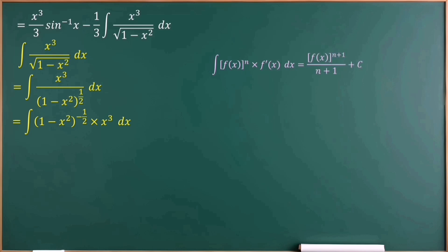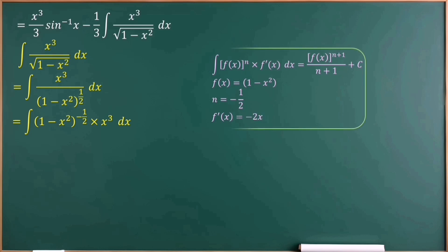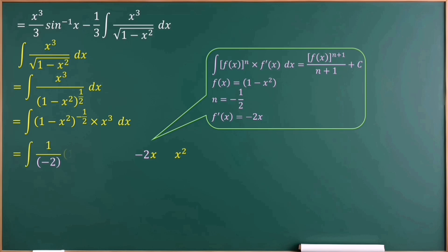Here, f(x) equals 1 minus x squared, and n equals minus one half. The differentiation of f(x) equals 0 minus 2x, or minus 2x. We have x cubed, and from x cubed we can extract an x. To get the minus 2 value, we put minus 2 in the numerator, and to cancel that out we put 1 over minus 2 in the numerator as well. Then we bring 1 over minus 2 outside the integral since it is a constant.